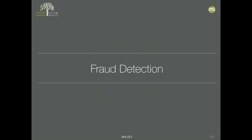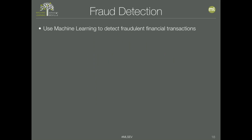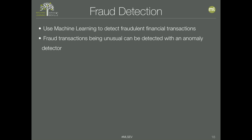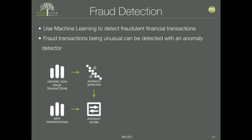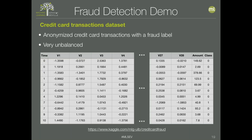The second example is fraud detection — using machine learning to detect fraudulent financial transactions in a credit card dataset. Fraudulent transactions are very unusual, and datasets are very imbalanced, which is why supervised learning doesn't work well. The workflow: use a historic dataset of non-fraudulent transactions, create an anomaly detector, score new transactions, and flag high-scoring ones as suspicious for analysts to review.